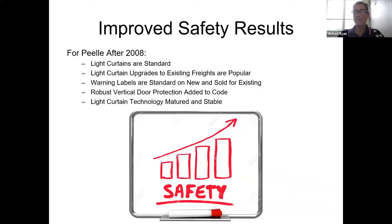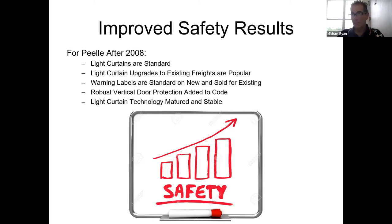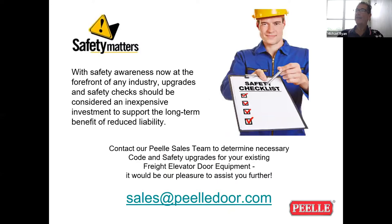As a result of these code changes and what we did to our product, we have seen far less complaints, far less lawsuits, because the car gate, which leads the car door and now has two light curtains on it, reverses before it strikes anybody. So we have far less complaints and product liability claims. Freight elevators, from the beginning to certainly now, have definitely gotten safer, and you'll see this stuff on any newer equipment, certainly anything 2010 forward.